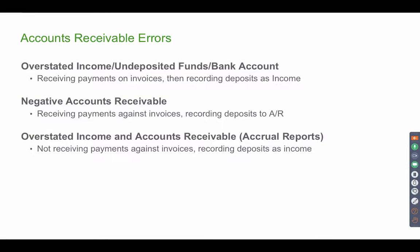Negative Accounts Receivable occurs when the client receives payments against invoices and then when the deposit comes in they categorize it as Accounts Receivable again, making it look like a double payment. Or they receive a payment but never created an invoice — that can also cause negative AR.